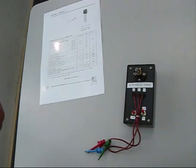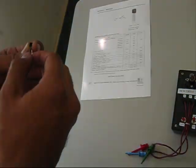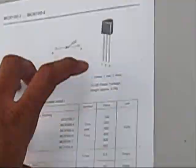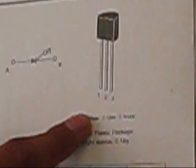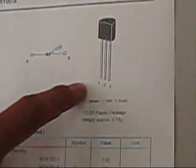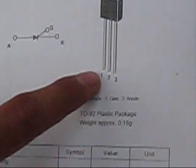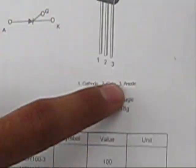Okay, in this case this is the MCR 100-6. We should see the spec of the SCR. Pin number one is cathode, pin number two is gate, and pin number three is anode.